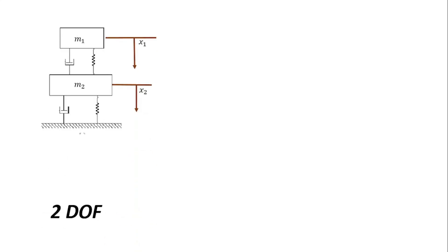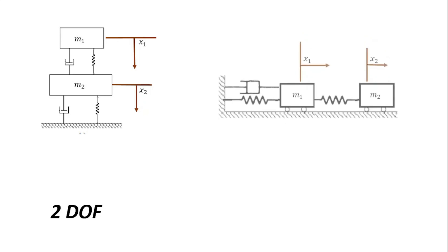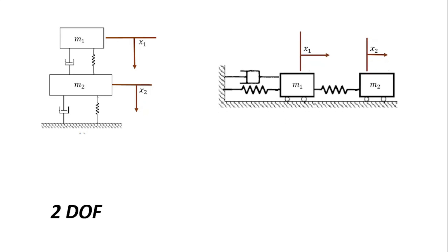For a two degree of freedom system, we have two masses separated from each other by a spring and a dashpot. We can have one mass displaced at a particular point in time without the other mass m2 moving, and we can have just m2 moving without m1 moving. Because this is the case, we say this is a two degree of freedom system.